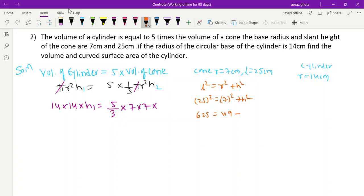h² = 625 - 49. h = √576, so h = 24. This is h₂, the cone height, so this is 24cm.